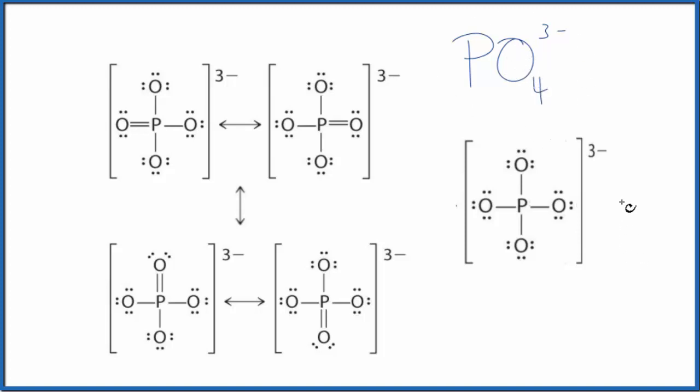When you draw the Lewis structure for the phosphate ion, probably the first thing you'll draw is this structure here with single bonds. Each atom has an octet, you've used all the valence electrons, looks like a pretty good Lewis structure.